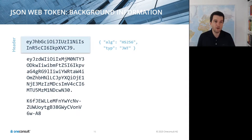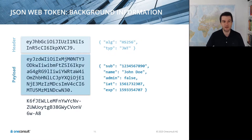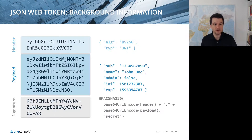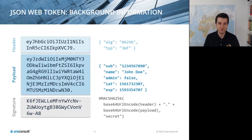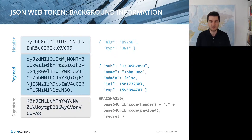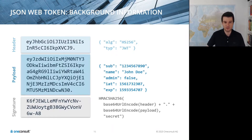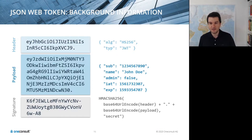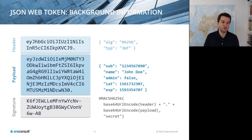A JSON Web Token has three parts: a header containing information about algorithms used, a main payload containing claims about who the user is and their privileges (for example, whether this user is an admin), and standard data points like when the token was issued and when it expires. The security comes from a shared secret used to create the signature, which must be shared between the endpoints that issue and all endpoints that consume the token.